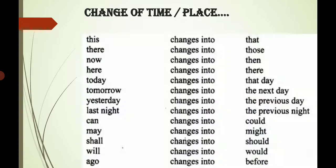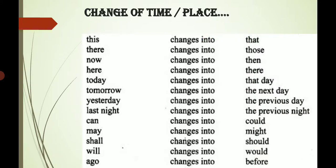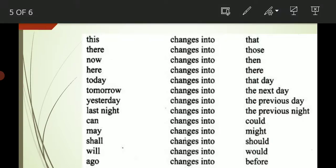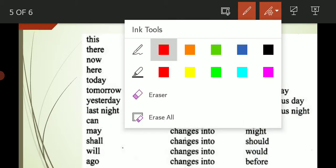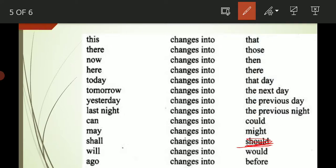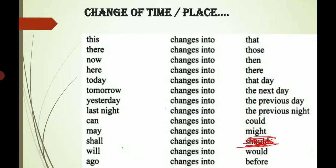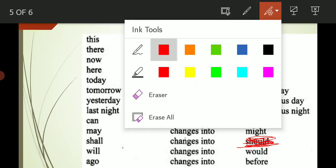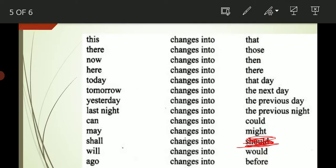The last change is change of time and place. If there is the word 'this', it will be changed into 'that'. 'There' will be changed into 'those'. 'Now' will be changed into 'then'. 'Here' will be changed into 'there', and so on for the rest of the changes. Also, please note: 'shall' and 'will' both will be changed into 'would' — an earlier note showing 'shall' changing into 'should' was incorrect.